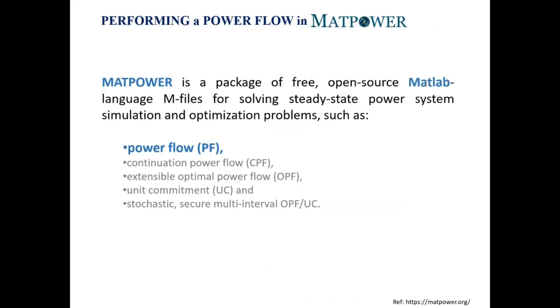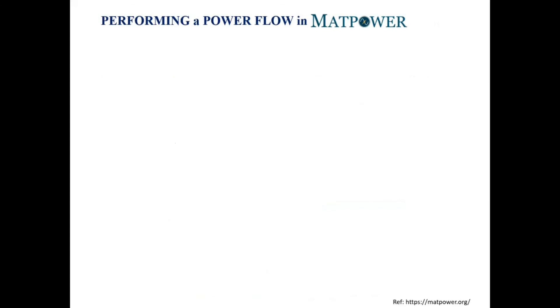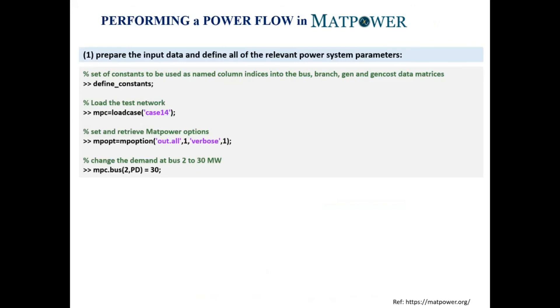The power flow problem can be solved in MATPOWER, which is a package of free open source MATLAB language M files for solving steady state power system simulation and optimization problems. Briefly, it includes two main steps. Number one is to prepare the input data and define all of the relevant power system parameters. This involves setting of constants to be used as named column indices into the bus, branch, generation and generation cost data matrices, then loading the test network, setting and retrieving MATPOWER options, and then changing the demand at bus 2.